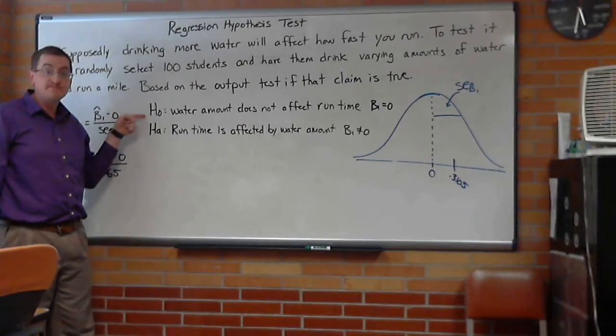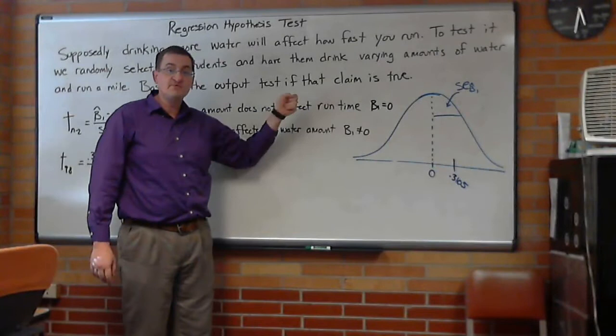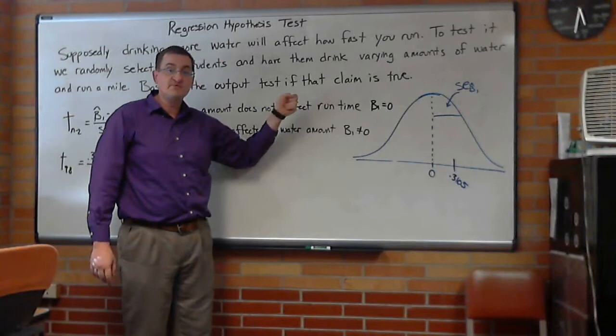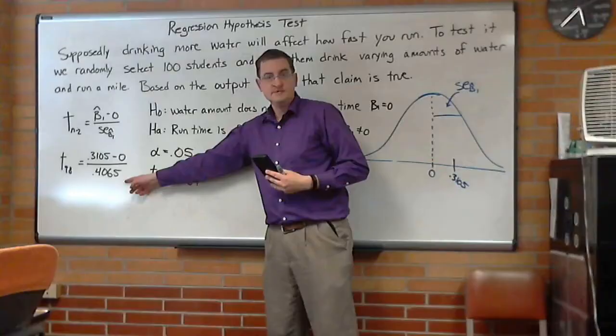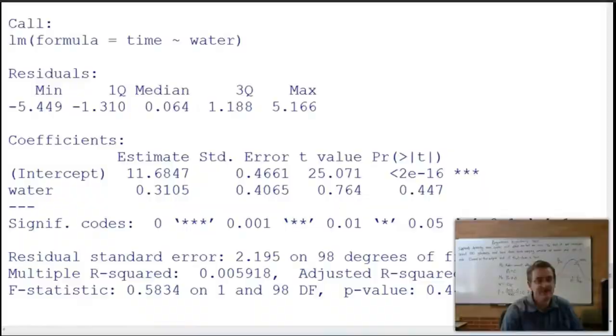So, I'll bet that I can finish out the rest of this hypothesis with one minute. Time me. I want to test if run time is affected by water amount. The null hypothesis would say not so much. The alternative says yes, there is a difference. The slope being zero for the null, slope not being zero for the alternative. I'm going to use an alpha of 0.05 because while some of you don't care, some of you are actually timing me and now I'm stressed. Here for the t-score is going to be 0.3105 divided by 0.4065, which comes out to be about 0.764. Did you notice I cheated? It's actually right there.